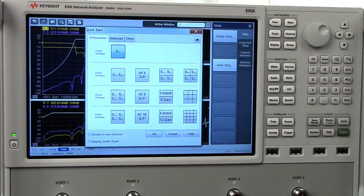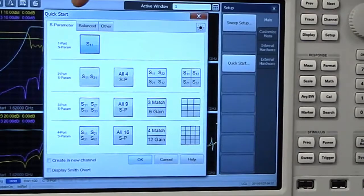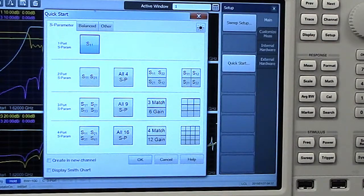The window contains three tabs: S-Parameters, Balanced, and Other. Each presents a variety of common measurements and offers choices that guide you through the setup process.